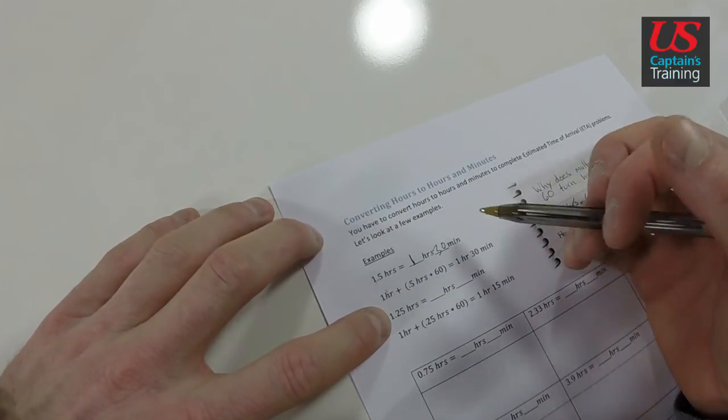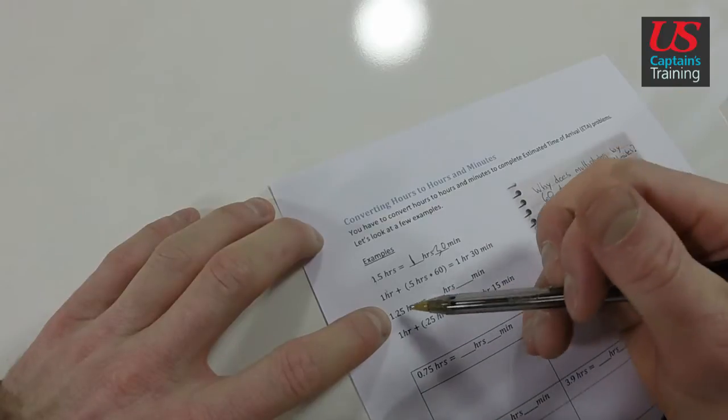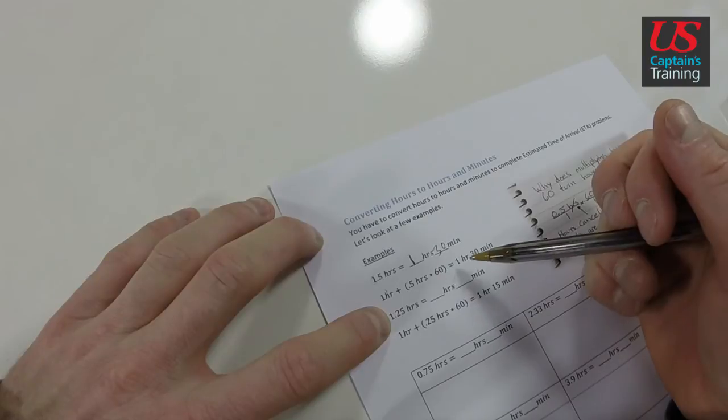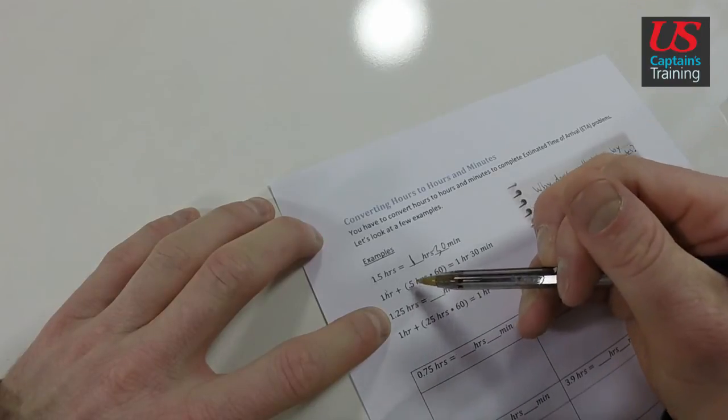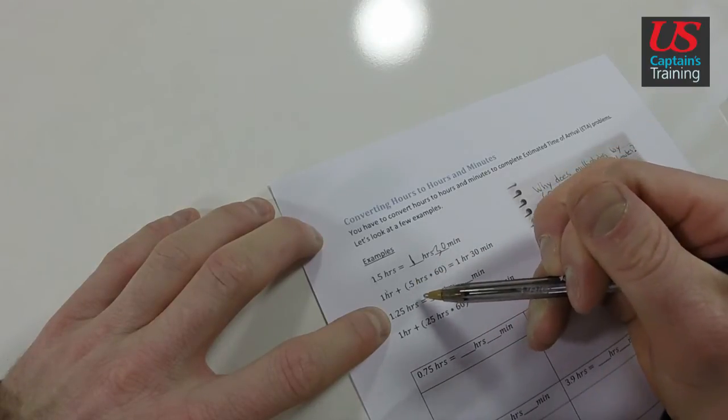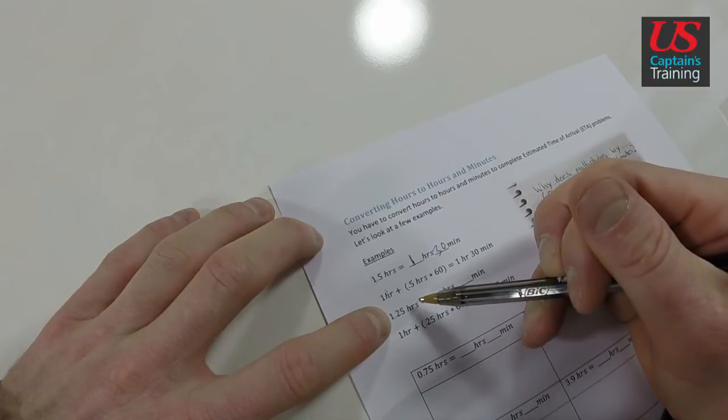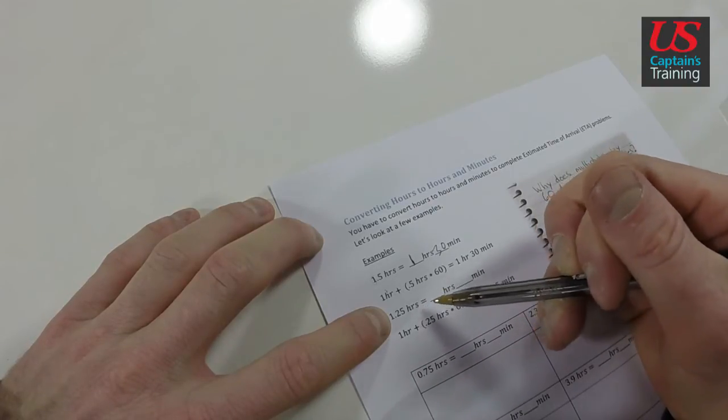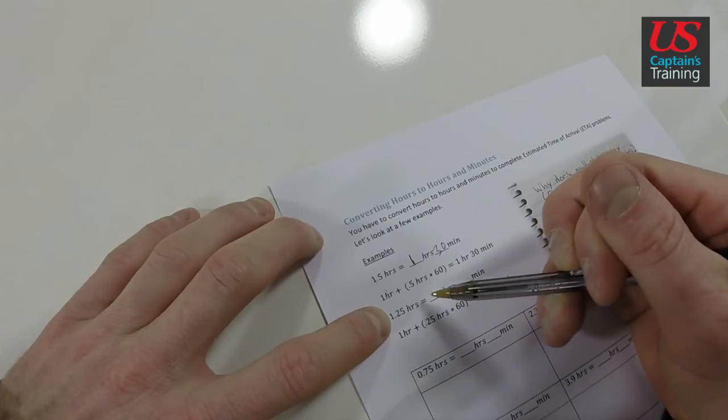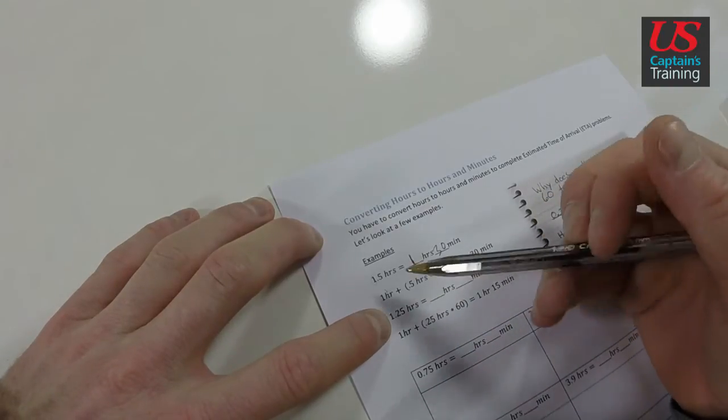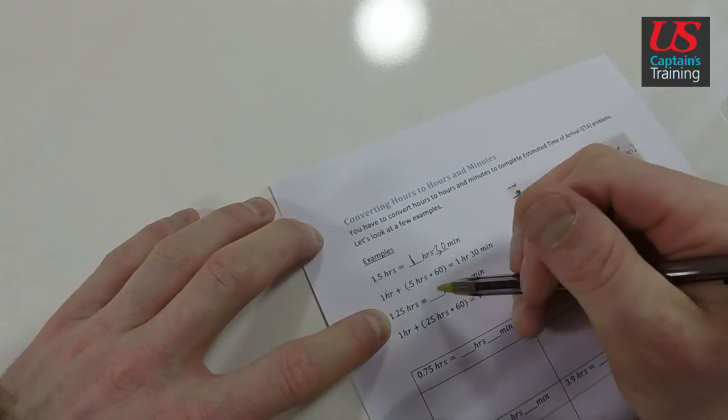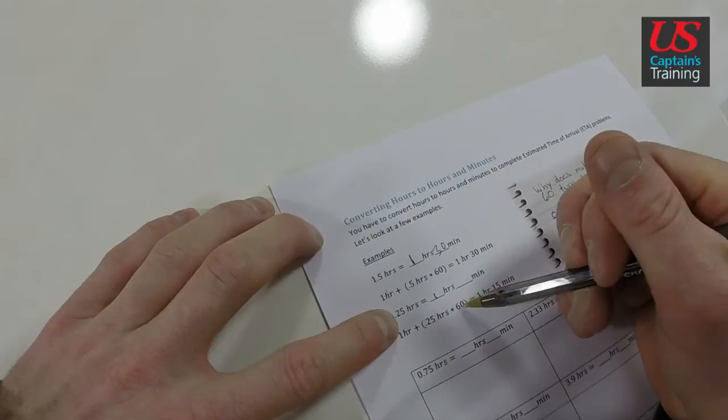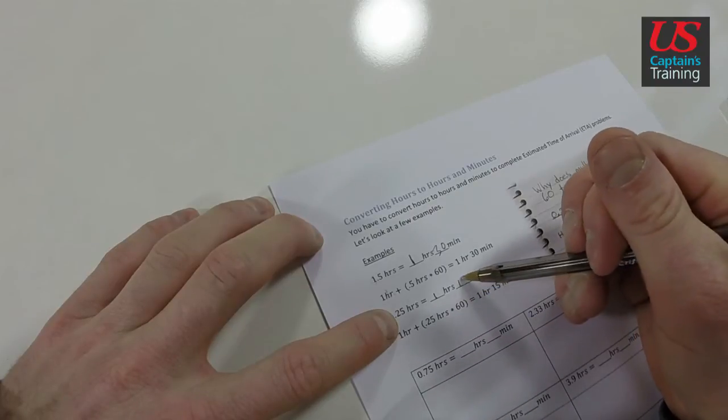Now we have 1.25 hours. Again, use your mental math. 0.25 hours is a quarter of an hour, that is 15 minutes. 15 minutes is 0.25 hours, 30 minutes is 0.5 hours, 45 minutes is 0.75 hours. So use your mental math - you do these every day. But let's look at this example again. 1.25 hours, we know we have one hour, and then that 0.25 hours times 60 equals 15 minutes.